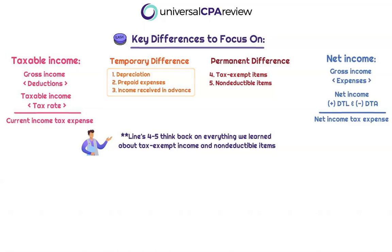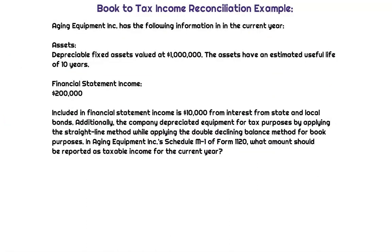Let's go through a quick example. We're talking about Aging Equipment Inc., and they have the following information in the current year: depreciable fixed assets valued at $1 million, with an estimated useful life of 10 years. The company has financial statement income of $200,000. Is that the amount we're going to use to calculate our tax liability? No, it is not — this is net income on the income statement.